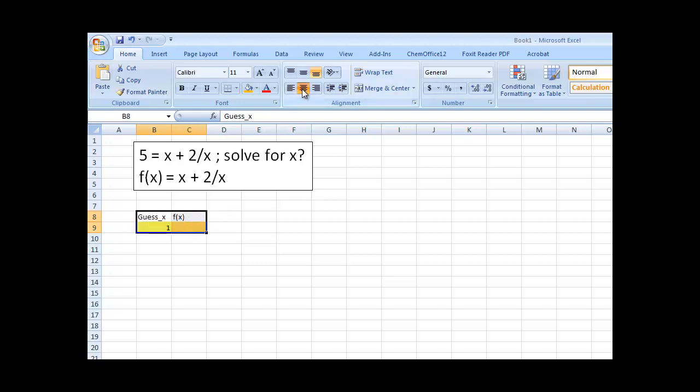I'm going to center these there. Make it a little prettier. So, I'm going to guess my first x value is 1. And then I need to find out the f of x so that it equals 5. Well, let me just enter this formula here. It's equal to b9 plus 2 divided by b9. So, that is our formula. It's equal to x plus 2 divided by x. And x we've defined it as in this b9.